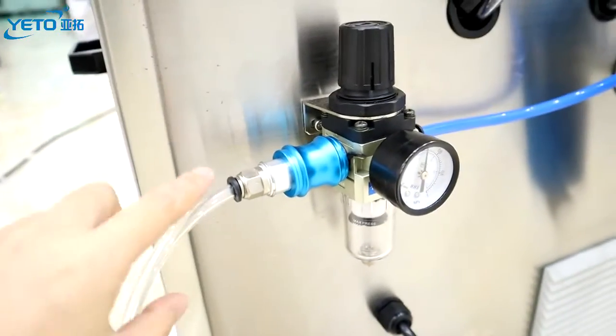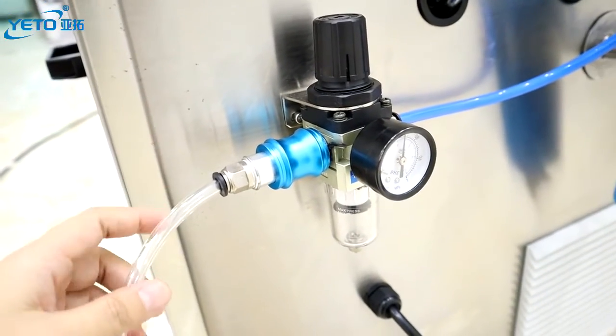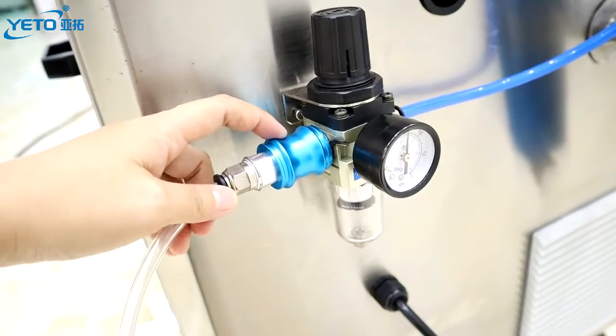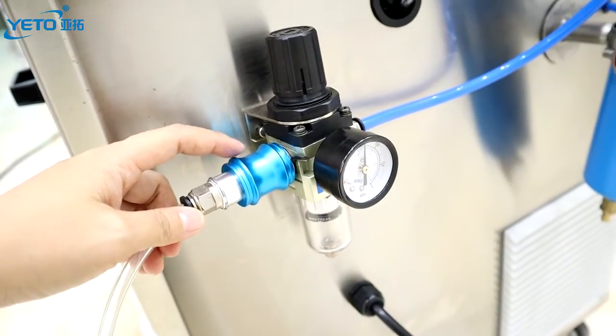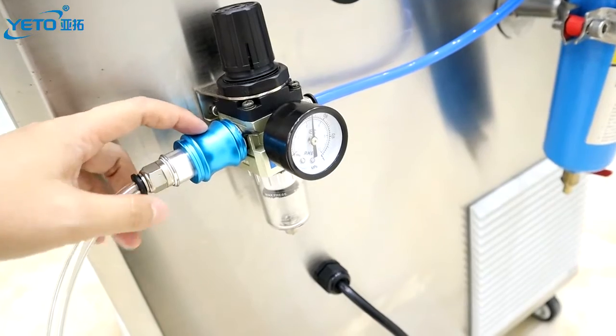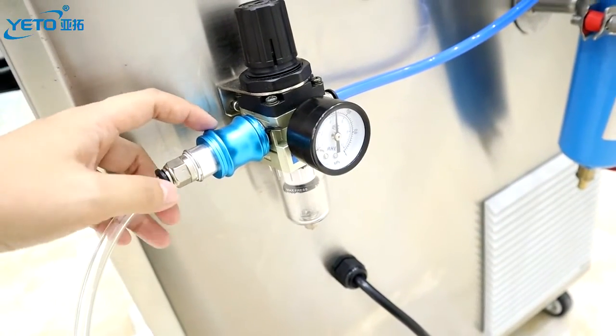Air source interfaces are here to connect with the air compressor. This blue one is the air source switch. Like this, the switch is open.